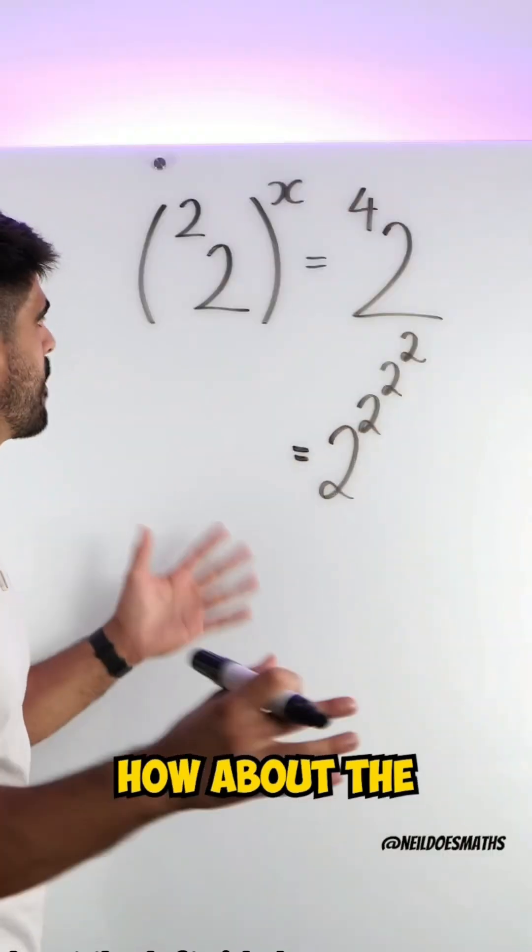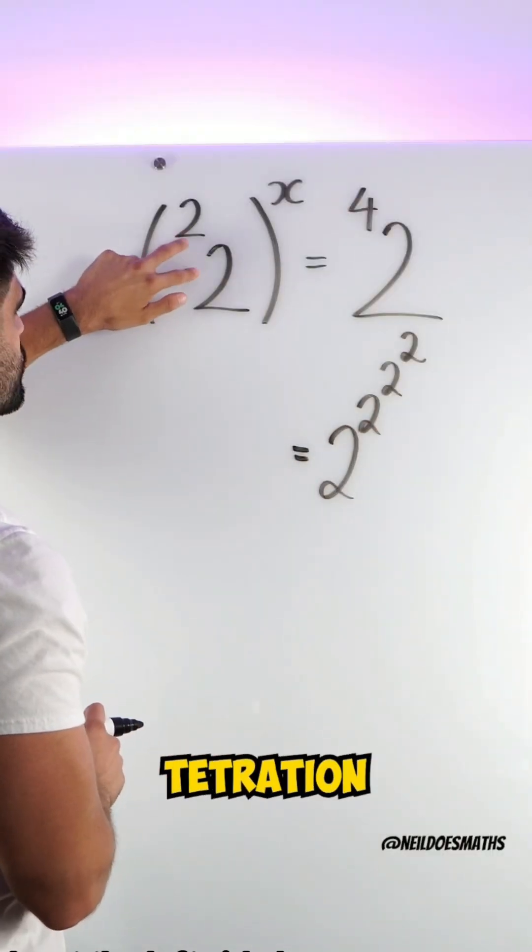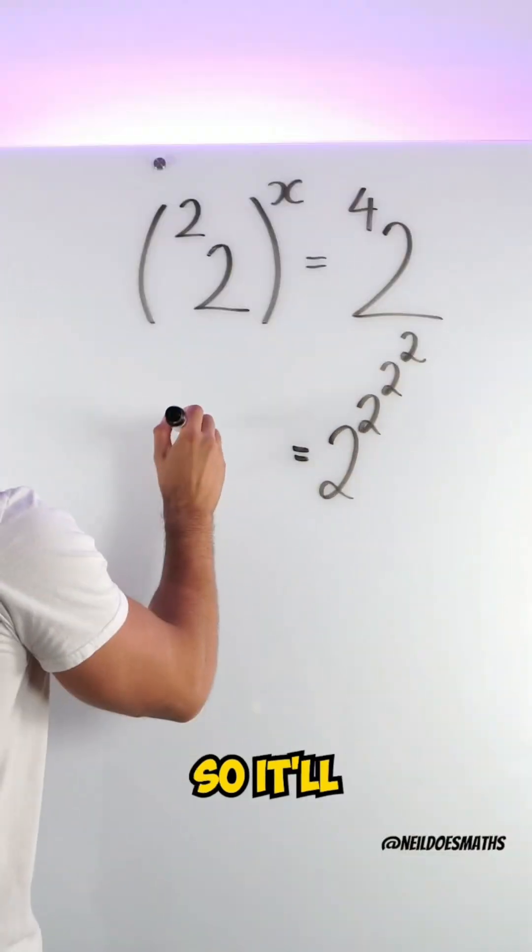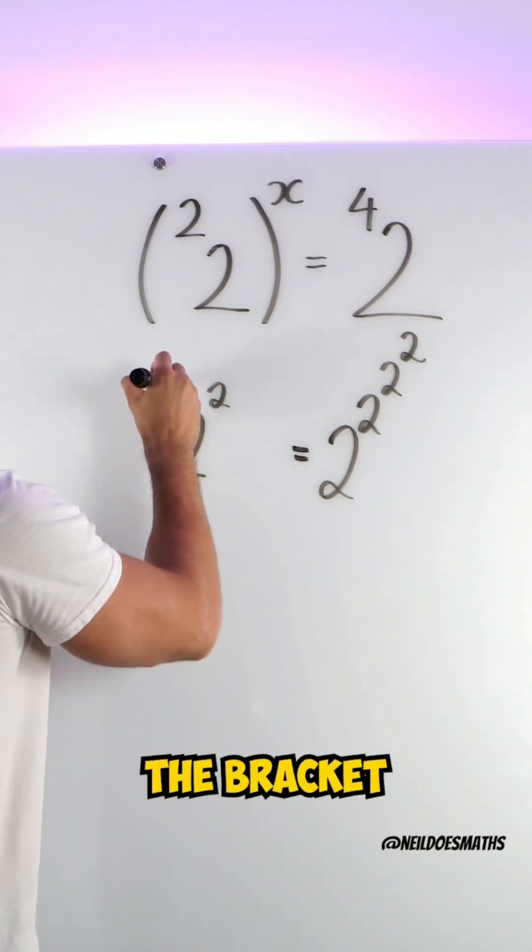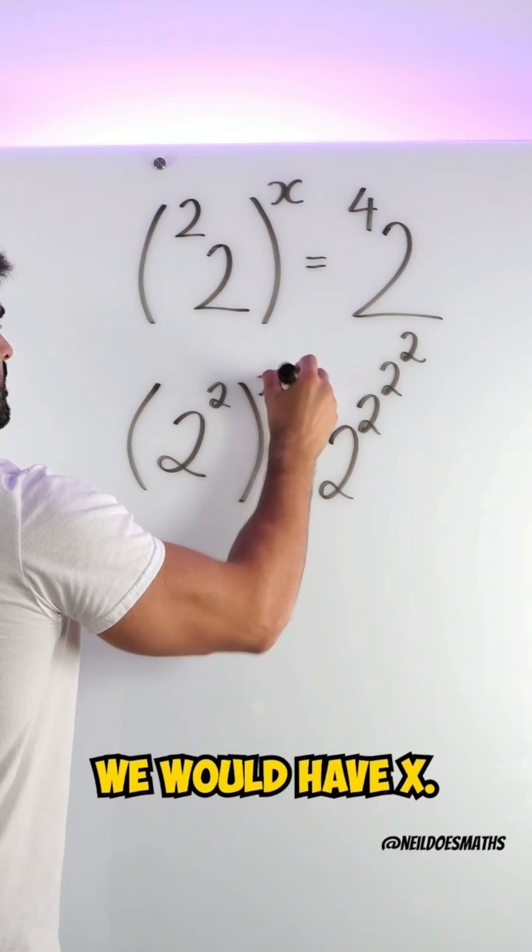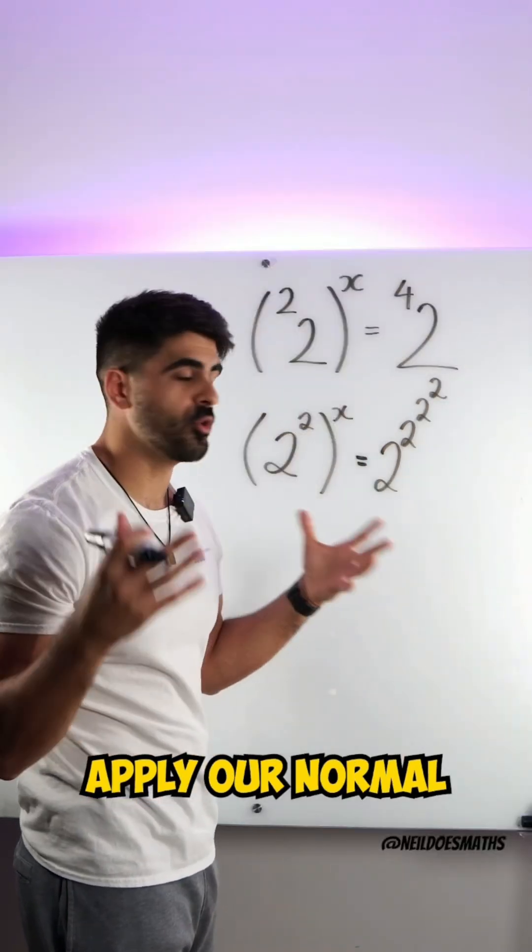How about the left side? Here we are tetrating the number 2 twice. So it would look like this: 2 as part of a power tower twice. And within the bracket we would have x. And now we can apply our normal index rules.